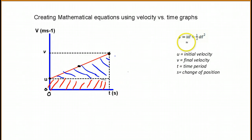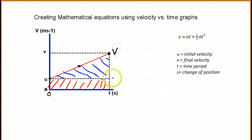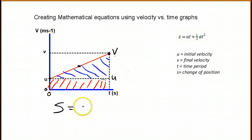We start with the same base setup, and we've got V here and we've got U here. We've got a triangle, we've got a rectangle. We're talking about S — the distance that you travel, or the change of position if you're talking about a vector.